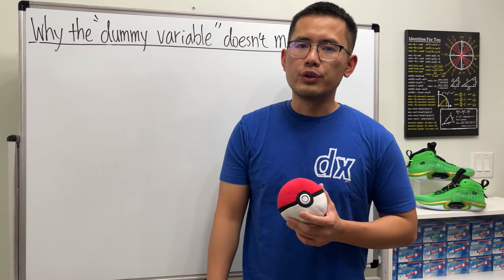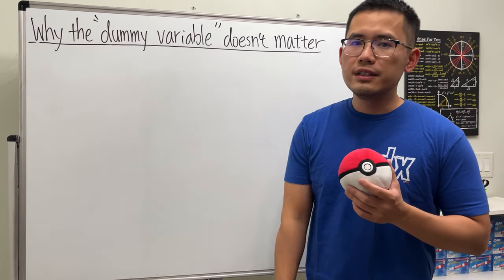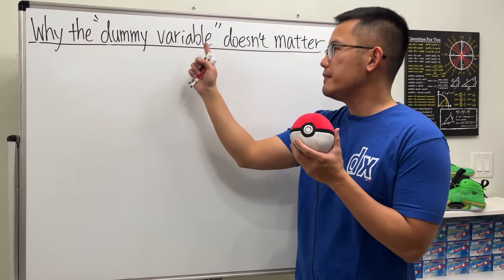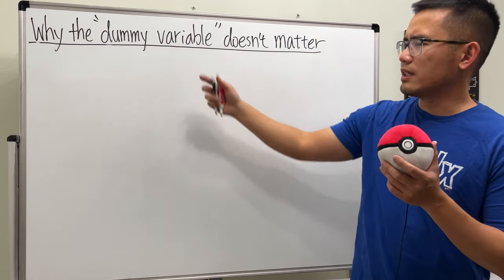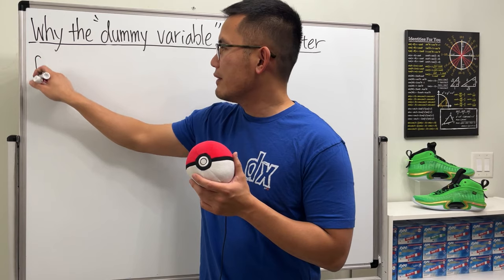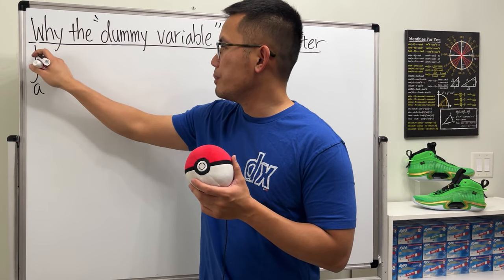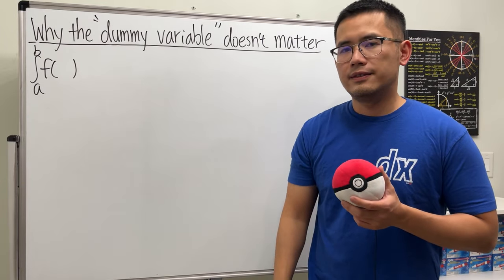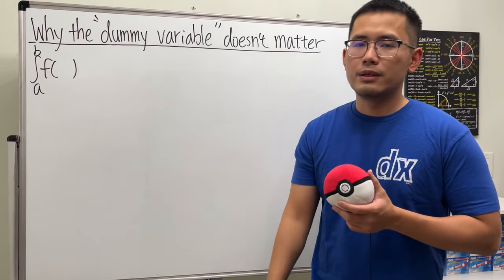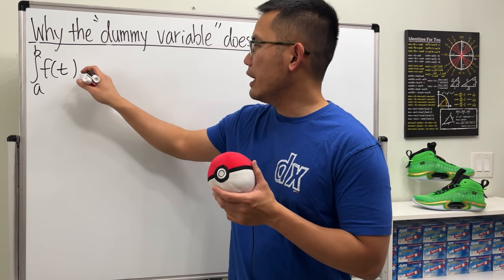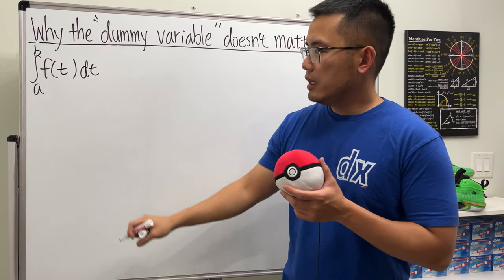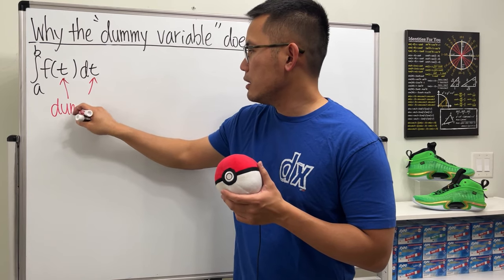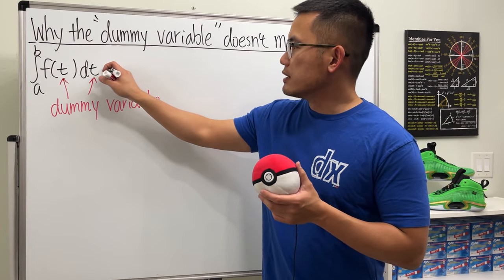I'm going to make this super clear. We would like to answer the question: why is it that when we are doing definite integrals, the so-called dummy variable doesn't matter? When we have a definite integral going from a to b of some function — f of x, f of y, f of z, f of t — let's put f of t with dt. In this case, t is an example of a dummy variable.